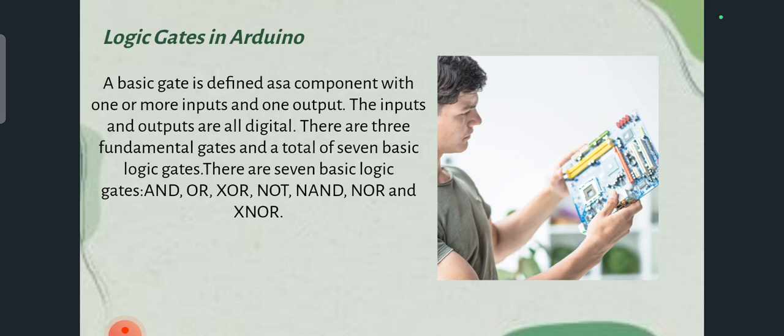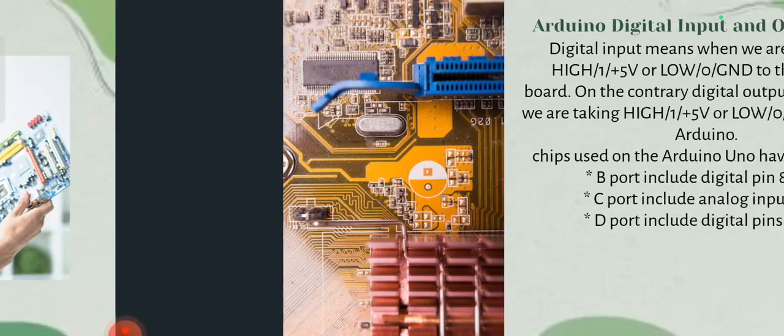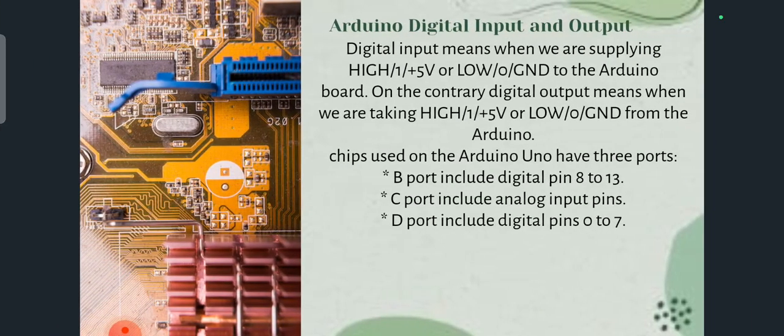There are seven logic gates that are majorly used in Arduino: AND, OR, NOR, NAND, XNOR, NOR gate, and XOR gate. These are the logic gates that are used in Arduino.